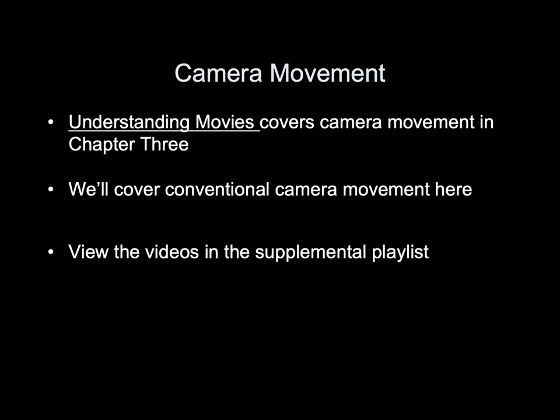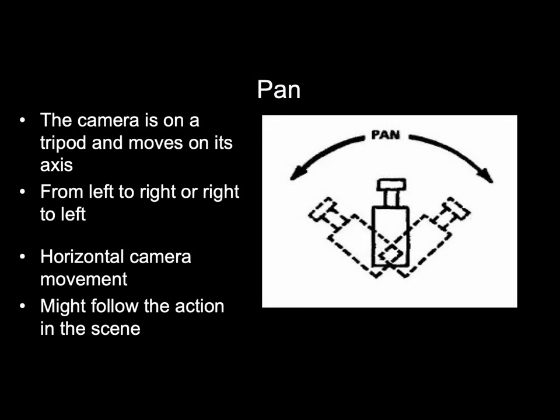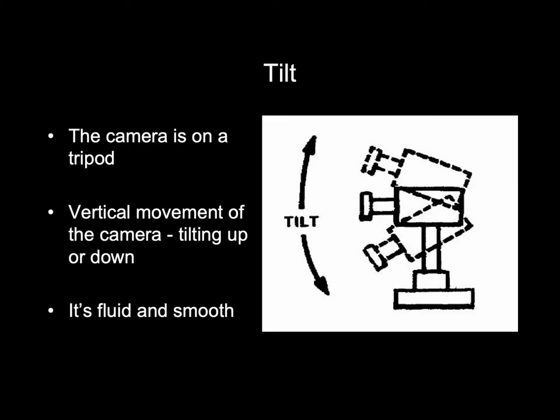Camera movement. Understanding Movies covers camera movement in Chapter 3. We'll cover conventional camera movements here — view the videos in the supplemental playlist. Pan: the camera is on a tripod and moves on its axis from left to right or right to left — a horizontal movement that might follow the action in a scene. Tilt: again on a tripod, a vertical movement of the camera tilting up or down; it is fluid and smooth.